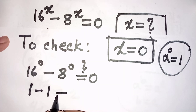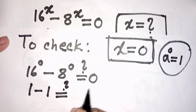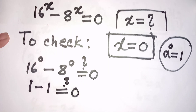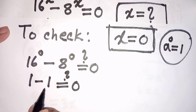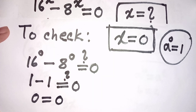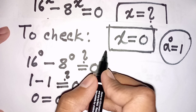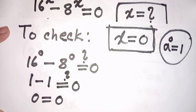So 1 minus 1 equals 0, which is equal to 0. So 0 is equal to 0 — left side is equal to right side. So our correct and final answer will be x is equal to 0.